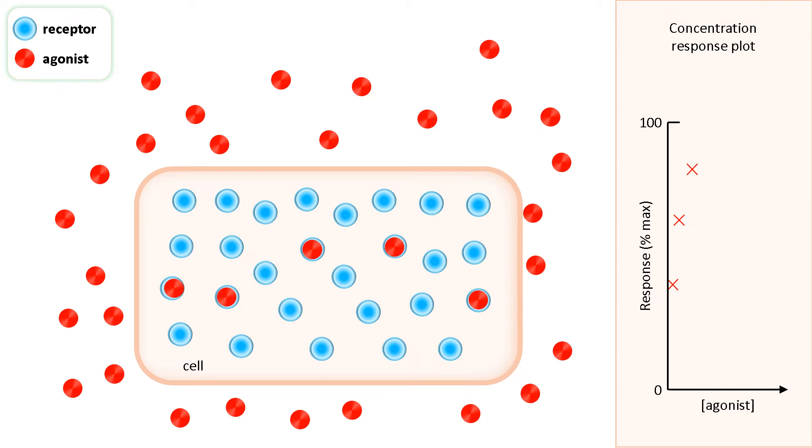Doubling the concentration of agonist yet again results in even more binding to the receptors. Plotting the response on the graph, you can see that it is nearing the maximum possible response. But there are still a lot of unoccupied receptors.